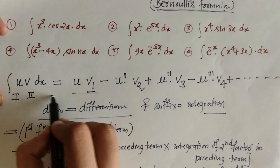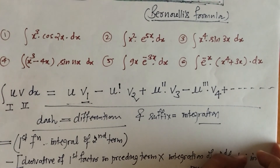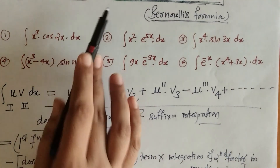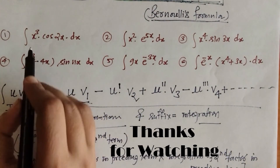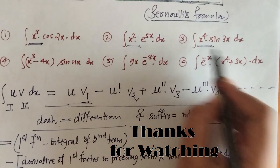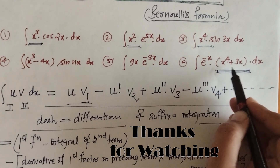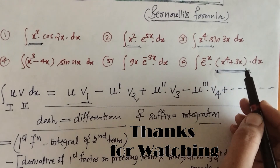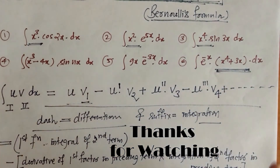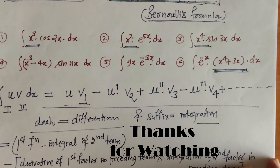So we have seen the generalized rule of integration by parts, and it is easy to use. We have to remember when to use this generalized rule: when one function is a power function of x. We can check that in all these integrals, one function is an algebraic or polynomial function of x. In this way we have seen the generalized rule of integration by parts. Thank you.